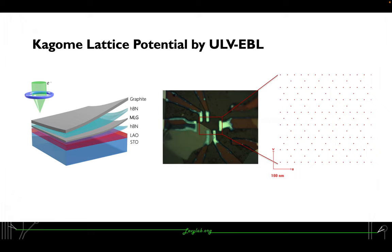With the ability to do this, we have basically two kinds of devices ongoing. The first looks like this stack: we have boron nitride encapsulated monolayer graphene on top of LAO/STO.